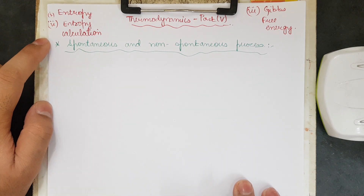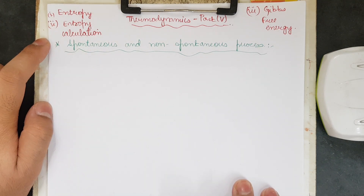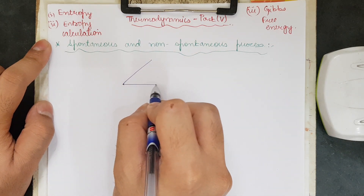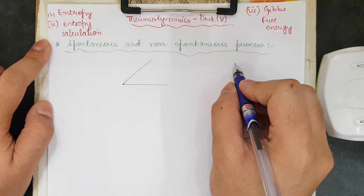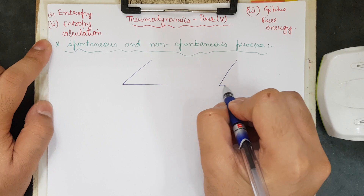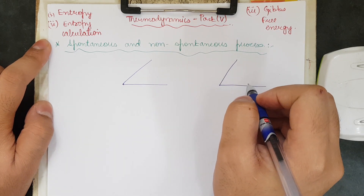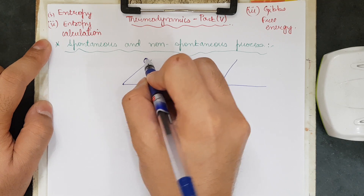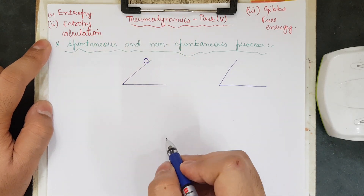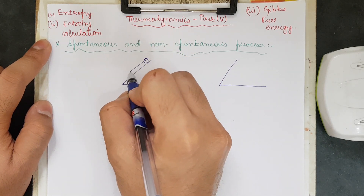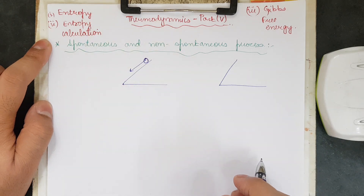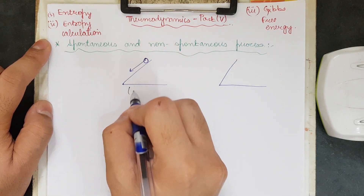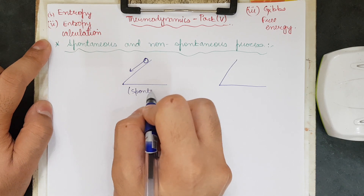First of all, let us begin with spontaneous and non-spontaneous processes. A process is spontaneous when work is done naturally or without any external force. For example, if we place a ball on an incline, it will tend to move downward naturally without any external force. This is known as a spontaneous process.